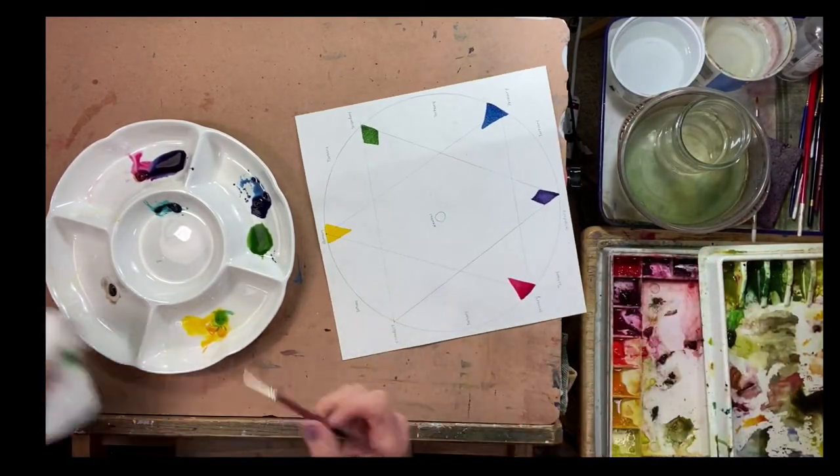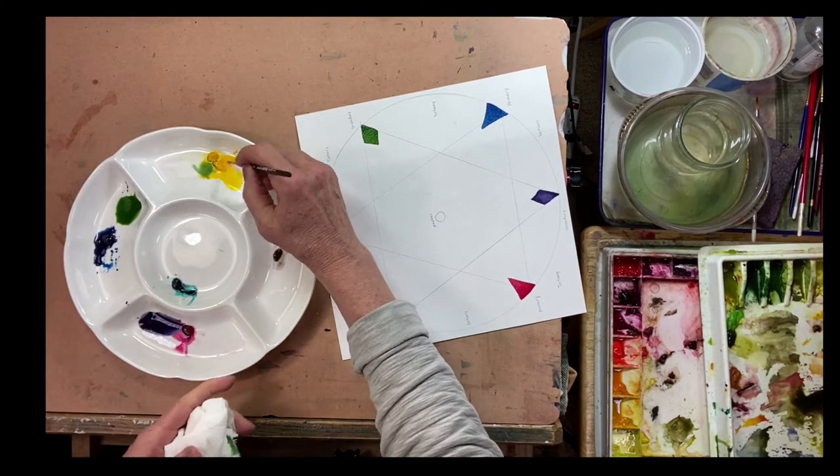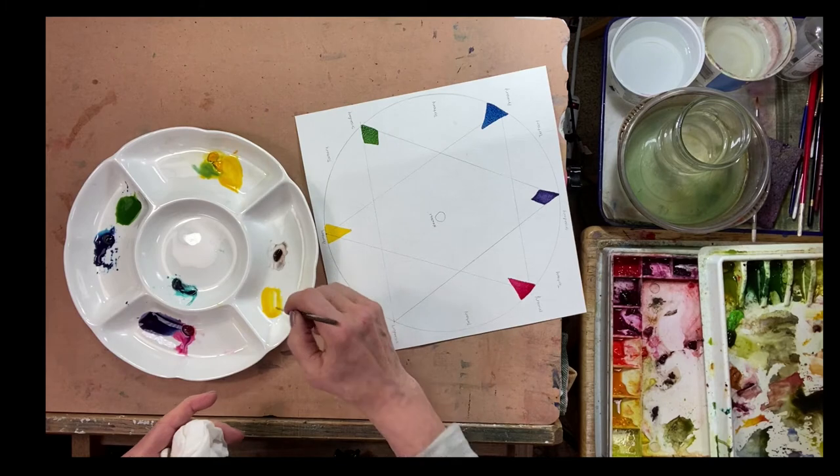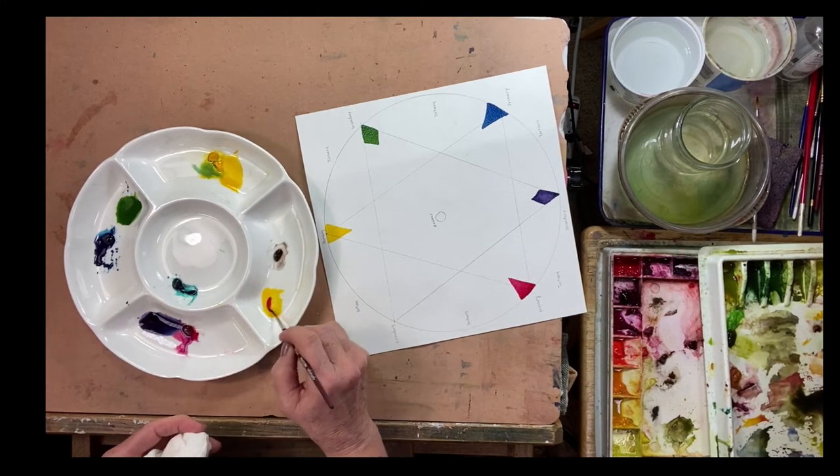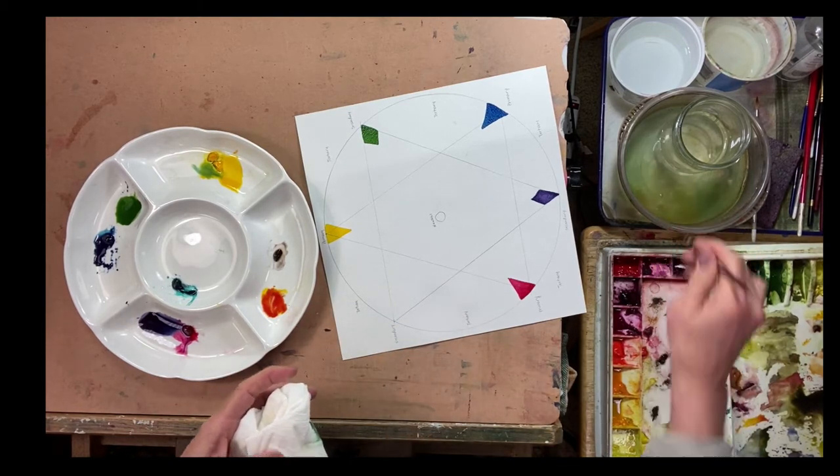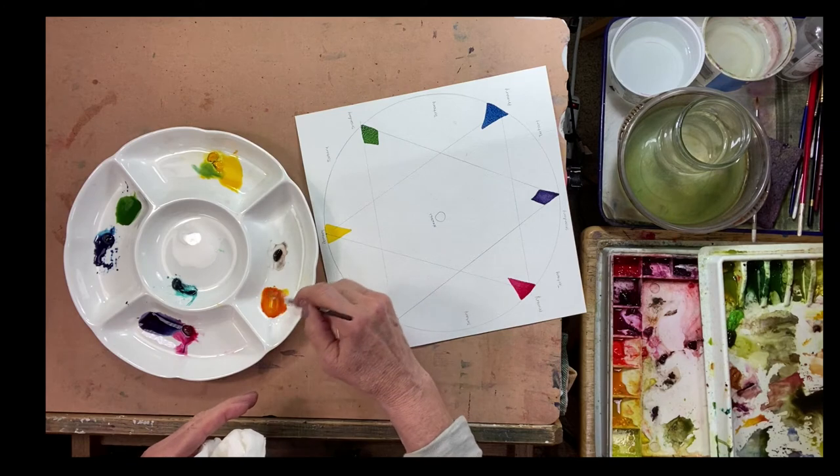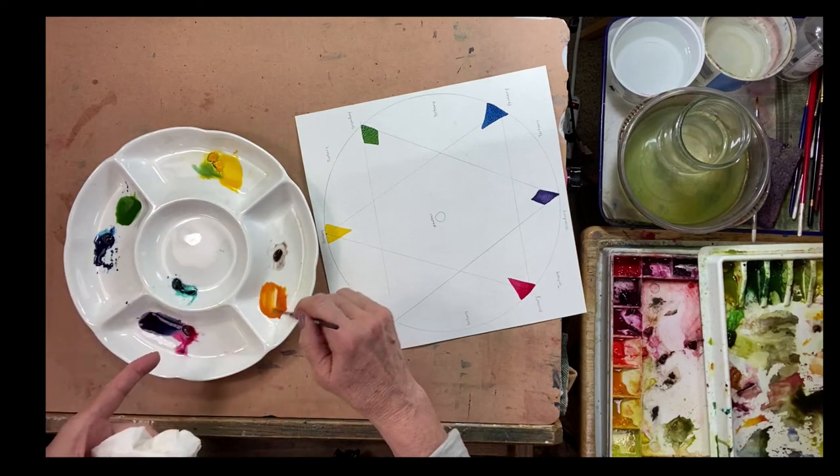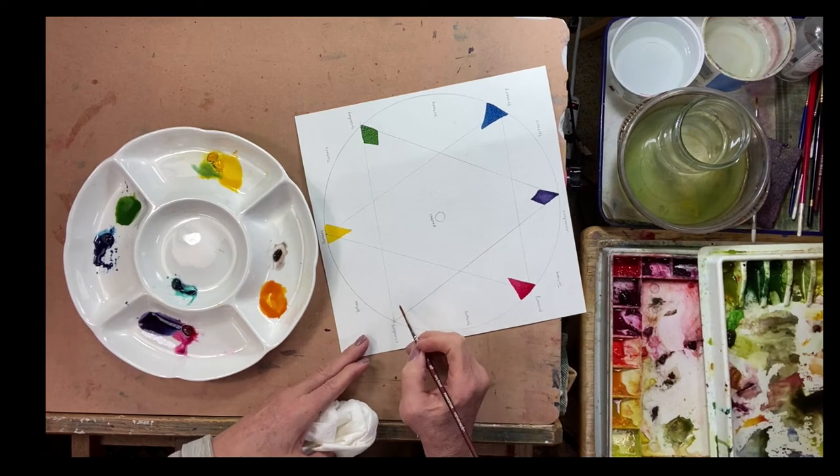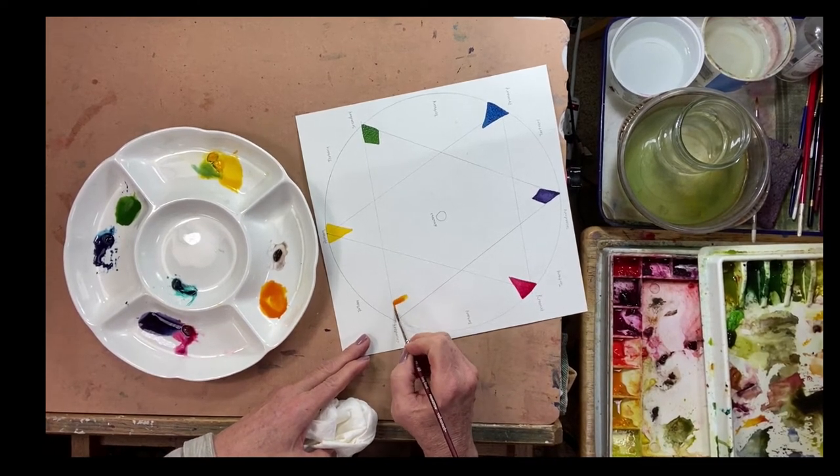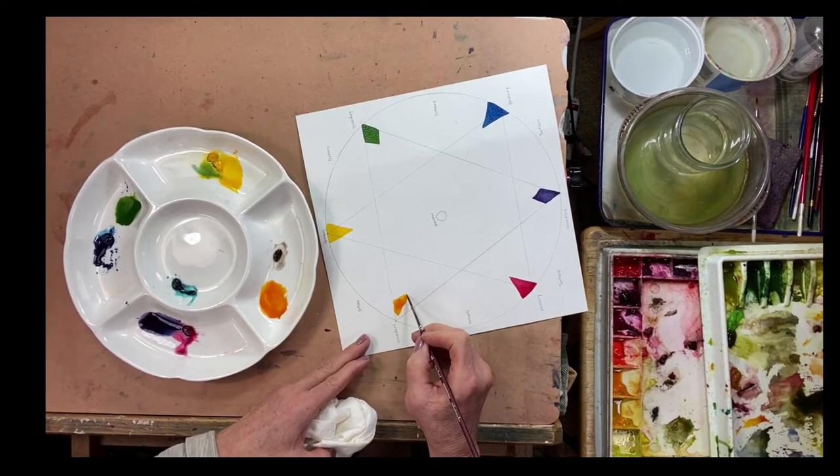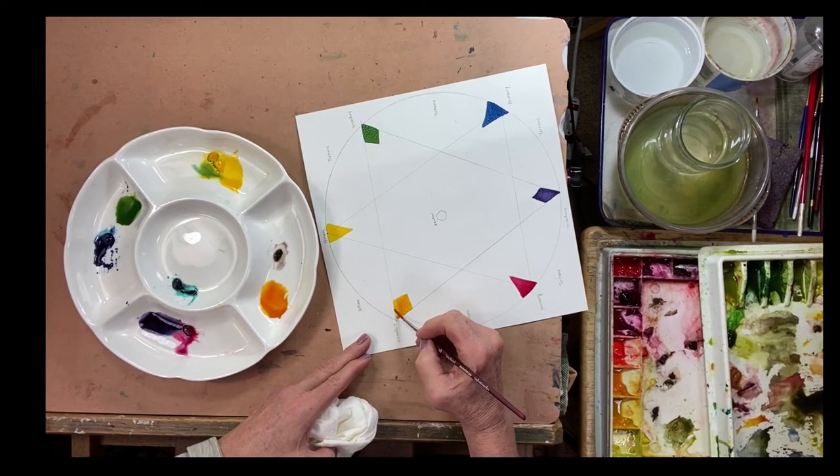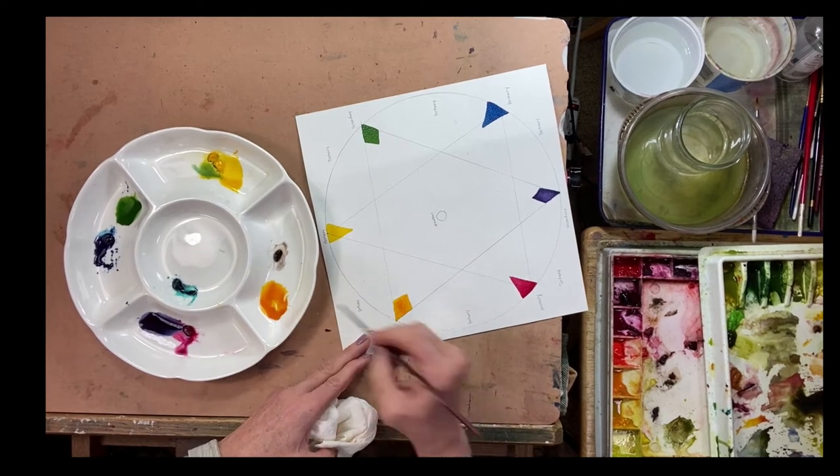And we've got our secondary on that side. And then we're going to come over here. This is kind of handy because I can just spin it around like a wheel. And now I'm going to go for the secondary with the red and the yellow. Reds are very strong, so as in the case here it was a little too much red. Now that looks like a pretty good orange, so I'm going to add that to my secondary section. All right, so we have our secondary colors all put in.